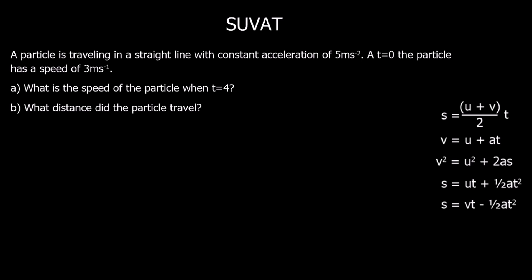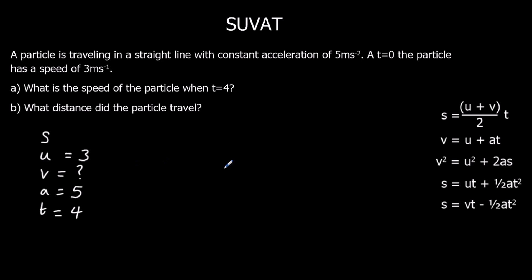Here's a question. A particle is traveling in a straight line with a constant acceleration of 5 meters per second squared. At T equals zero, the particle has a speed of 3 meters per second. We write down what we know: acceleration is 5, and at T equals zero the speed is 3, so that's initial velocity. What is the speed of the particle when T is 4? So when T is 4, what is the speed? That's the final velocity. We want to pick an equation with U, V, A and T in it.